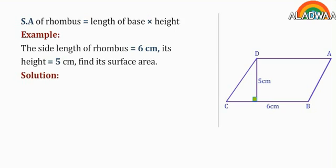Solution: Surface area equals length of base times height, equals 6 times 5 equals 30 cm squared.